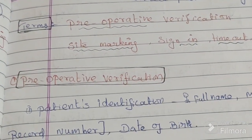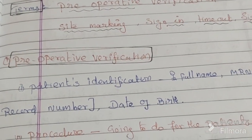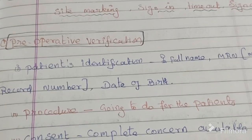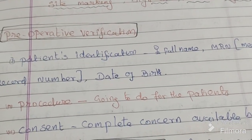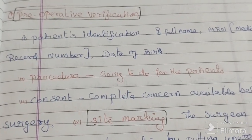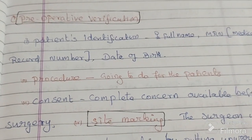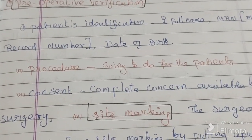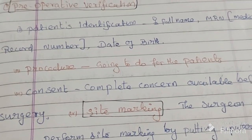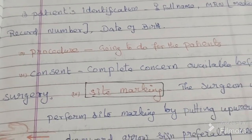The first term is pre-operative verification. Before surgery, we need to verify certain things: first, patient identity, which includes the patient's full name, medical record number, and date of birth. Second, the procedure — what procedure is going to be done for the patient. Third, consent — there should be a complete consent available before the surgery.